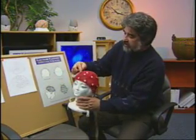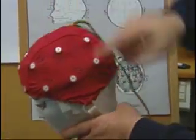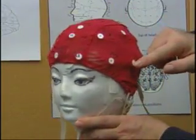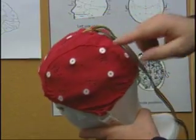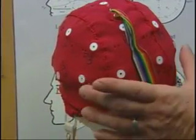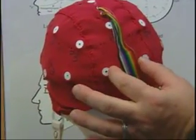F3, FZ, and F4 are in the front. T3 and T4 are above the ears. We have P3 and P4, T5 and T6, which will be P7 and P8 in the future, and O1 and O2.